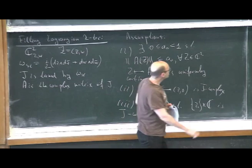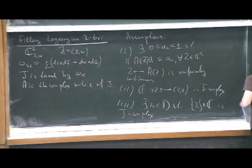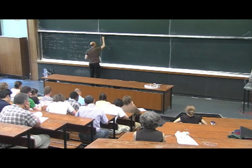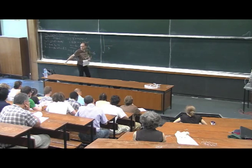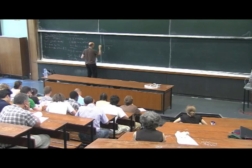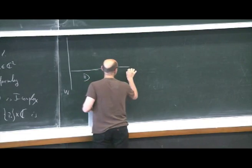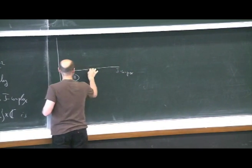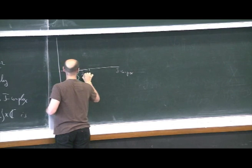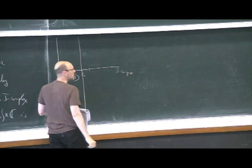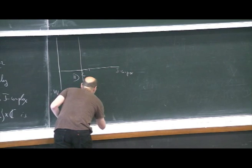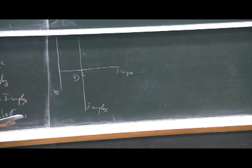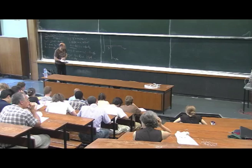So the picture is the following. We have here the unit disk D, with coordinates Z and W. We suppose that the horizontal disk D × {0} is J-complex. Somewhere there is a point Z₀, and the vertical line {Z₀} × C is also J-complex. So these two lines are J-complex.